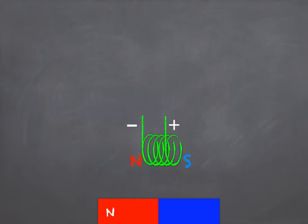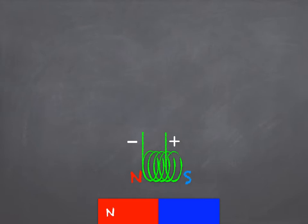As we can see here, we've got the two south poles close together, they're going to be repelling each other. We've got the two north poles side by side, they're going to be repelling each other. That means we have to do work to push our coil closer to the magnet.